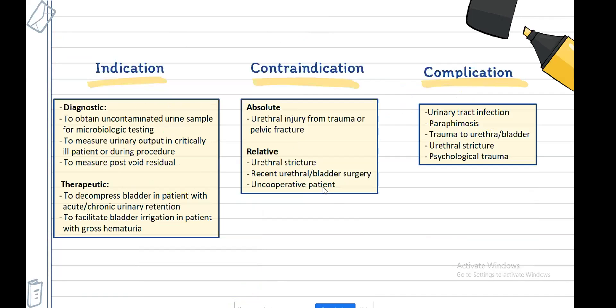Bladder catheterization is indicated for diagnostic or therapeutic purposes. Diagnostically, it is used to obtain an uncontaminated urine sample for microbiological testing, to measure urinary output in critically ill patients or during procedures, and to measure post-void residual. Therapeutically, it is used to decompress the bladder in patients with acute or chronic urinary retention and to facilitate bladder irrigation. It is absolutely contraindicated in patients with urethral injury from trauma or pelvic fracture. Other relative contraindications include urethral stricture, recent urethral or bladder surgery, and uncooperative patients.